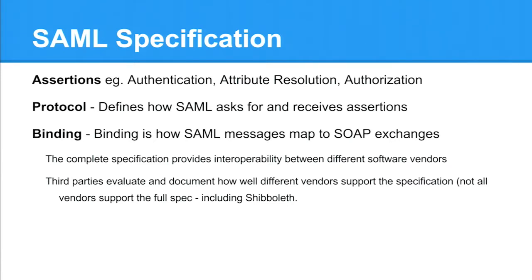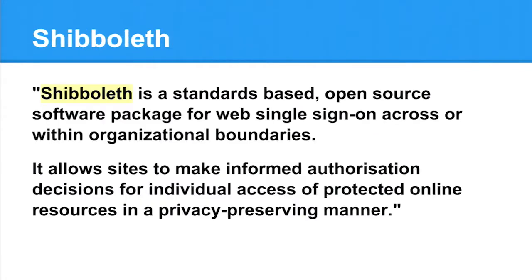SAML is a specification and Shibboleth is an implementation of that specification. The specification is made up of three components: assertions - things like rules around authentication, attribute resolution, and authorisation; a protocol defining how SAML asks for and receives assertions; and a binding defining how SAML messages map to SOAP exchanges. The complete specification is designed for interoperability between different software vendors. A lot of commercial providers provide SAML support in their products, allowing them to share authentication and attribute information. Not all vendors support the full spec - even Shibboleth itself is missing core components of SAML, which can be fun.